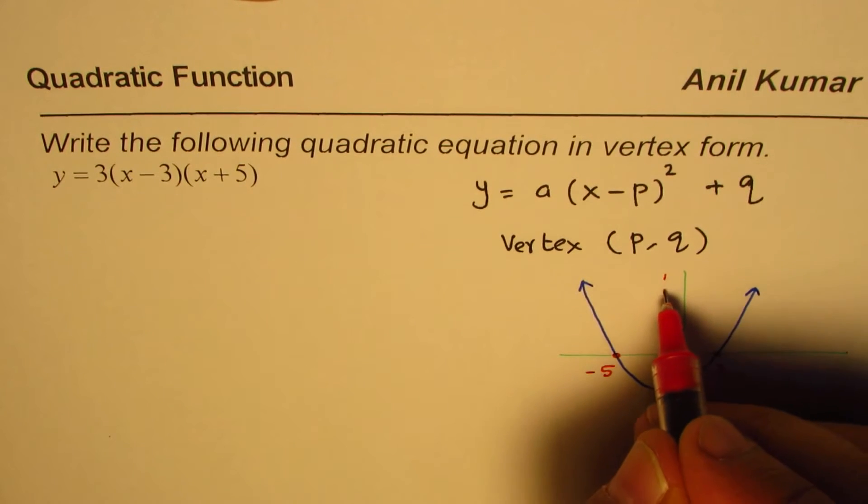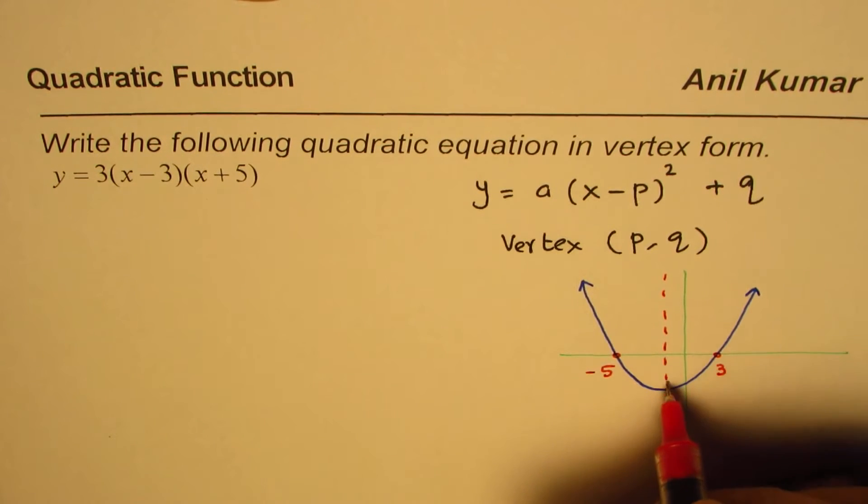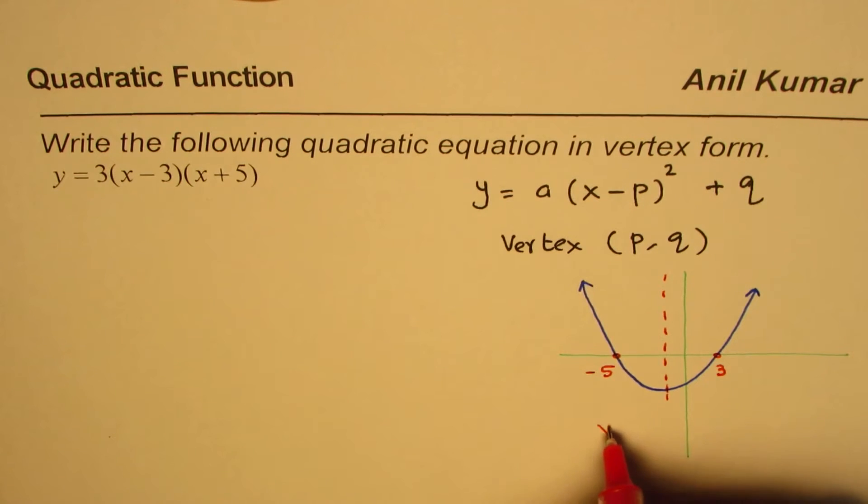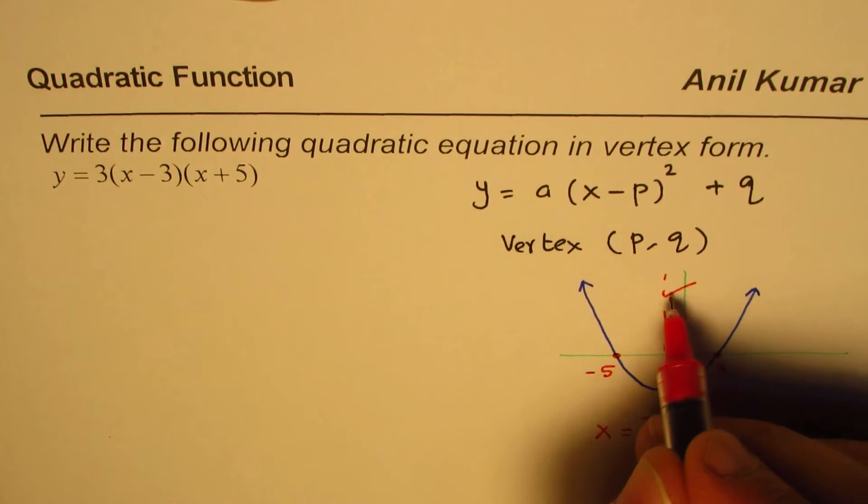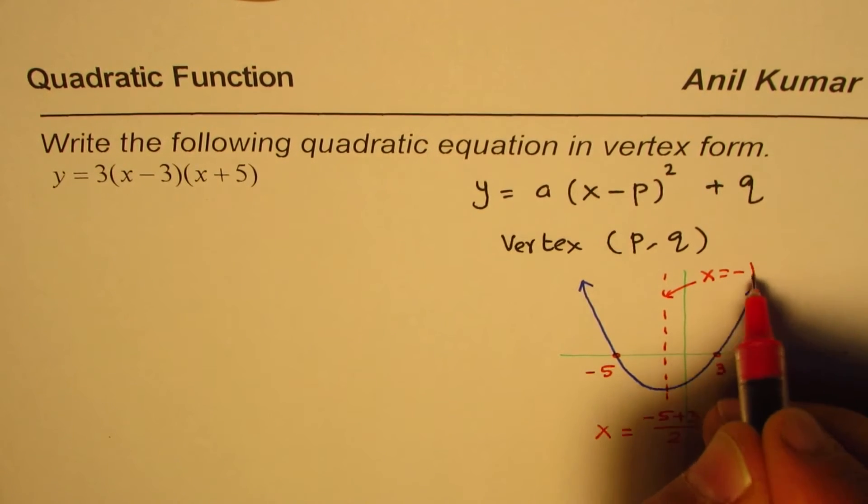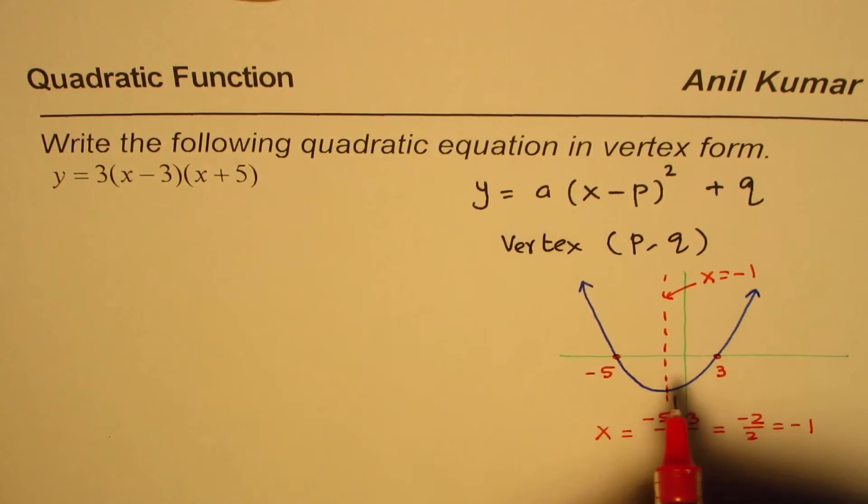The axis will be right in the middle, so the axis x will be at the mean value or average of these two. So we can add them up, divide by 2, that gives us minus 2 by 2 equals minus 1. So this axis is at x equals minus 1. So with that we have got the p value.